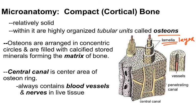Within each osteon is a hollow area — at least a non-mineralized area — called the central canal. These are also called Haversian canals; you might come across that term. That space in a living animal is filled with blood vessels and nerves. Bone is living tissue and it's very metabolically active, and that has to do with its function as a mineral storehouse.